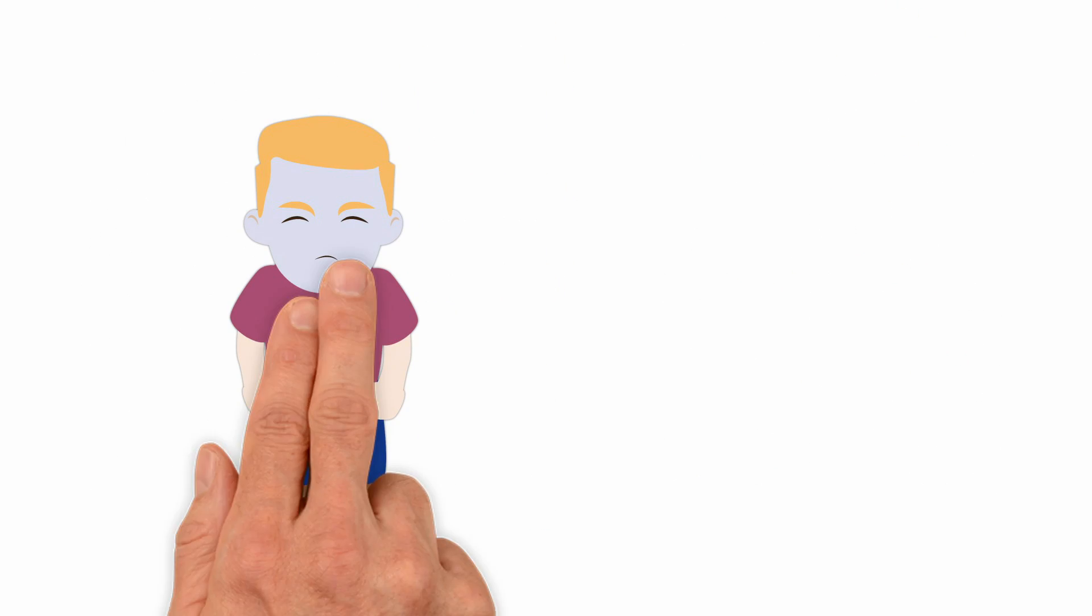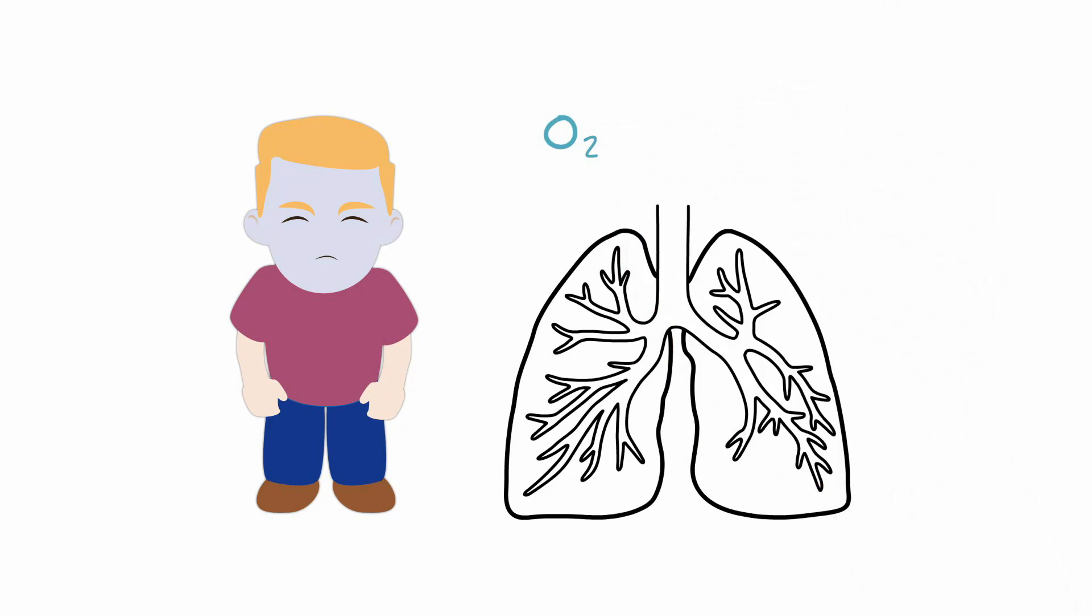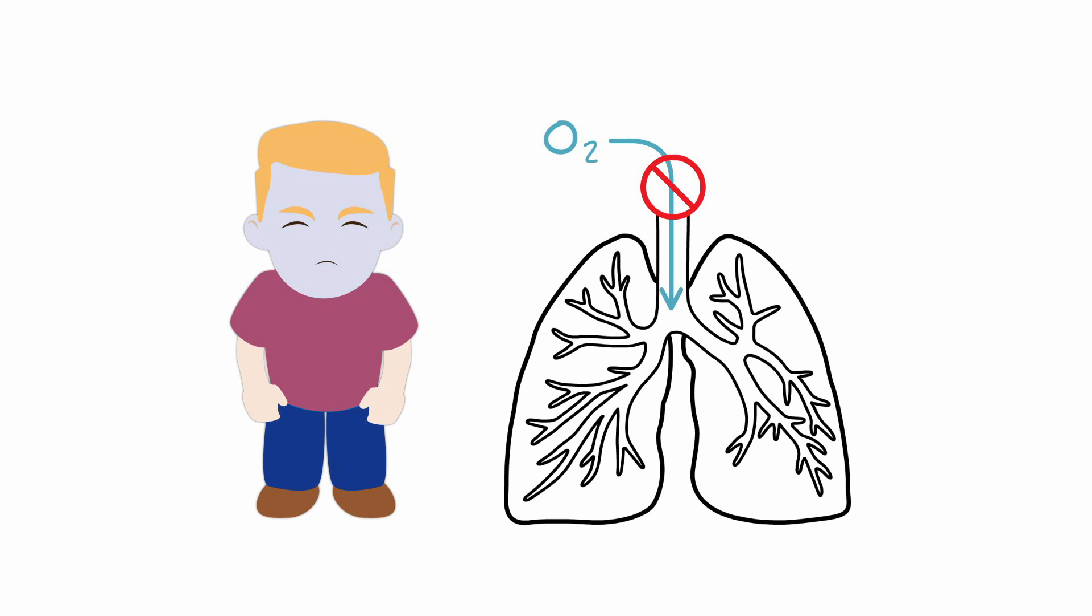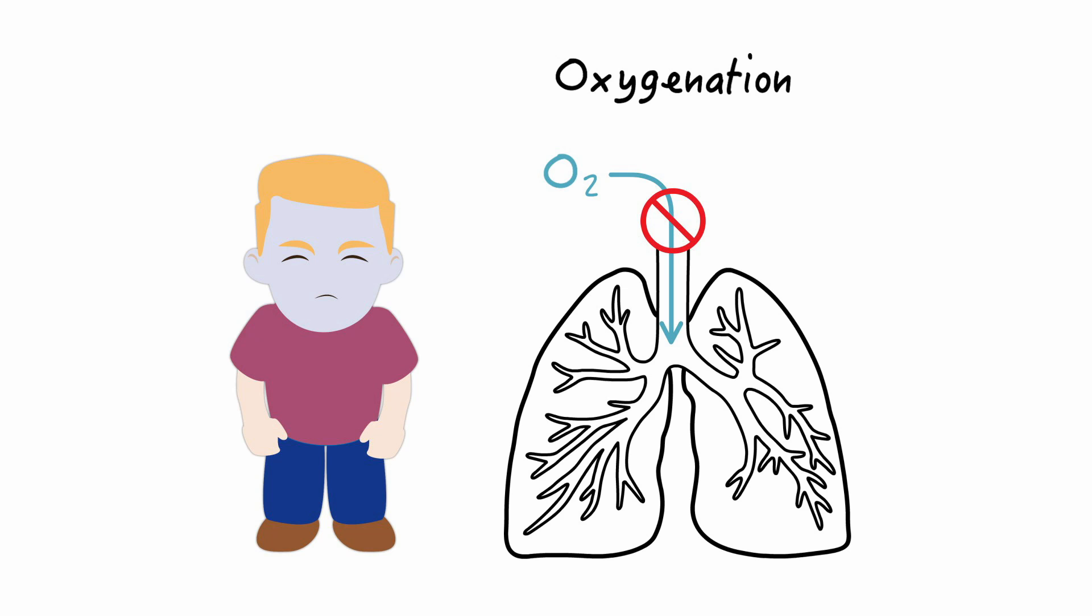Or perhaps the patient might be ventilating adequately but the oxygen that's breathed into the lungs may not effectively distribute to the body. You see, the adding of oxygen into the blood is called oxygenation. A patient who is not oxygenating properly exhibits decreased levels of PaO2 on the ABG.